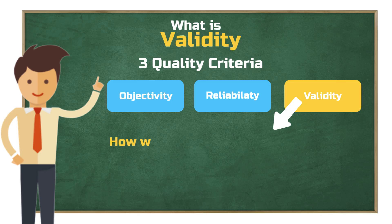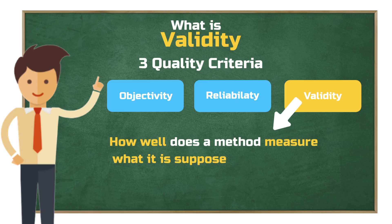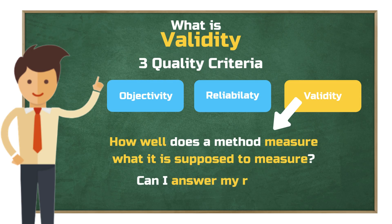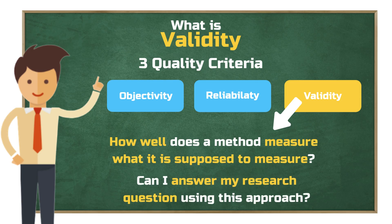Validity answers the question: how well does a method measure what it is supposed to measure? Or, put differently, can I answer my research question using this approach? In another video, I've already given a general overview of the three quality criteria — objectivity, reliability, and validity. But to clarify what validity means, here's a simple example.